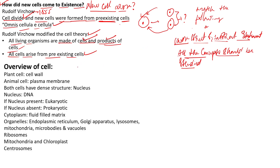Now let us look at the cell overview. Plant cells have a cell wall — they exhibit this unique character. Animal cells do not have any kind of cell wall; instead, they exhibit directly the plasma membrane. Both cells have a dense structure, that is the nucleus.